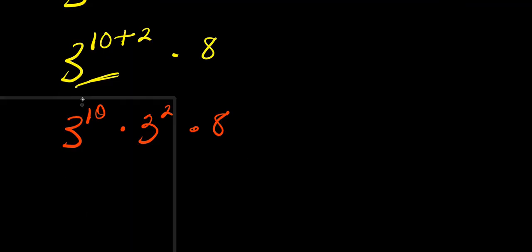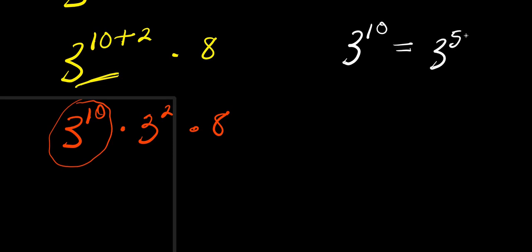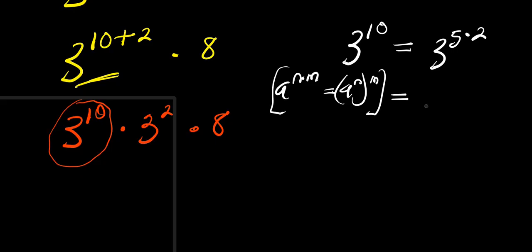So we need to find the value of three to the power ten. We can write three to the power ten as three to the power five times two. Using the power rule, this becomes three to the power five, all raised to the power two. Now three to the power five equals three times three times three times three times three, which is 243.